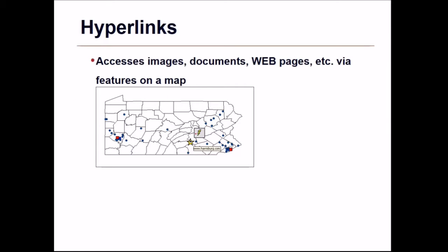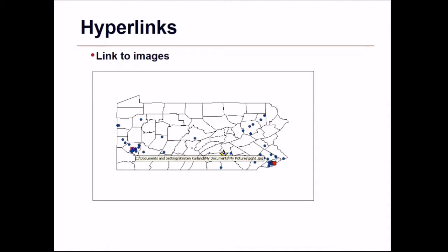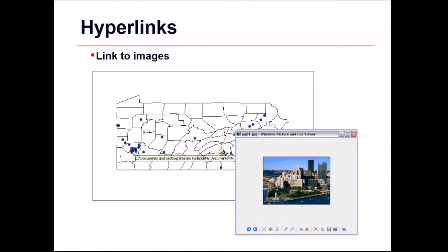Hyperlinks allow you to access images, documents, web pages, and other content from features on the map. By placing your mouse over a point feature you can see the hyperlink, and clicking it takes you directly to the linked resource. The image pointed to by the hyperlink can be viewed this way. This was the basic idea about choropleth maps and the various concepts related to map layers, scale thresholds, and hyperlinks. Thank you so much.